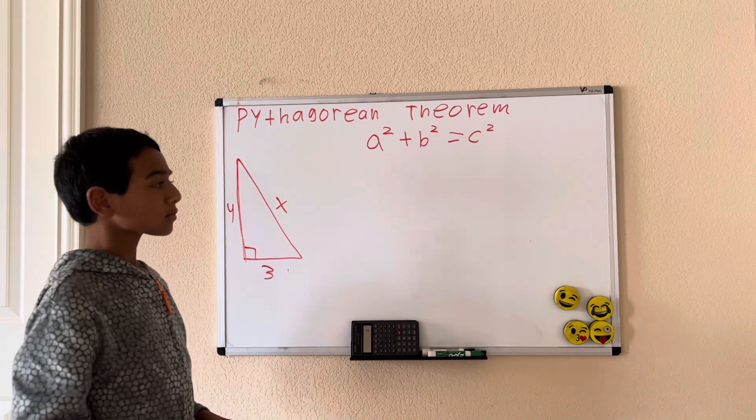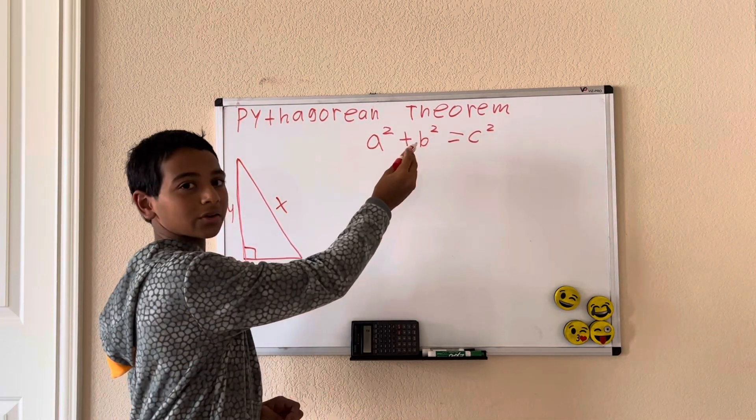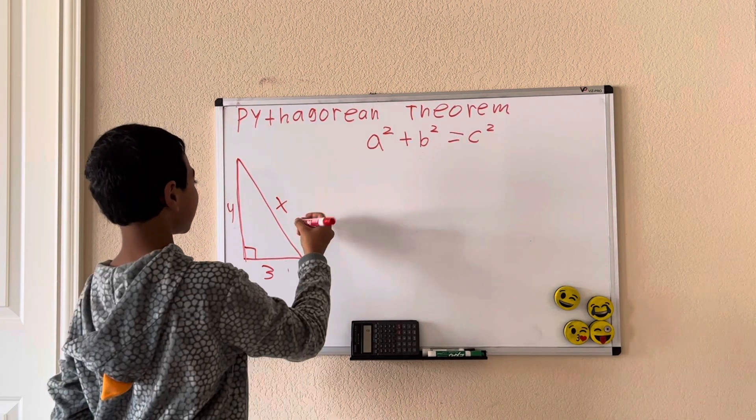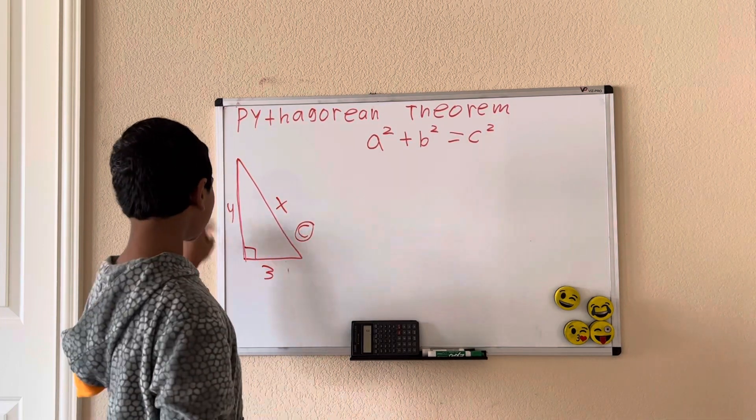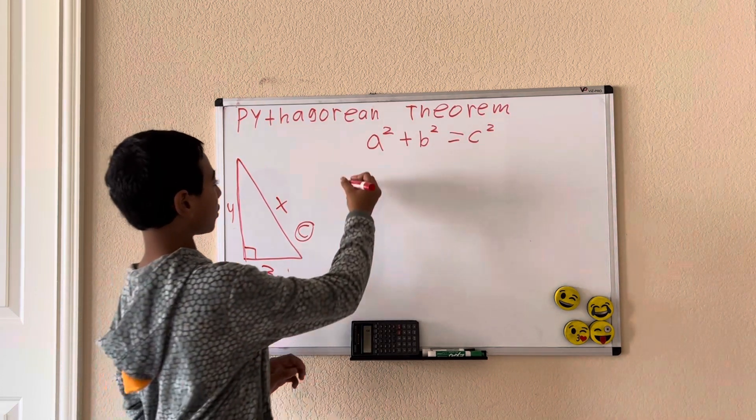So we use the formula a² + b² = c². C is the hypotenuse, or the longest side. A and B can be any of those - the order doesn't matter.